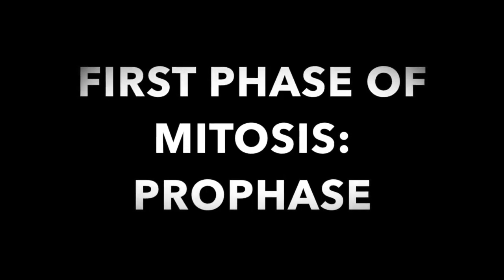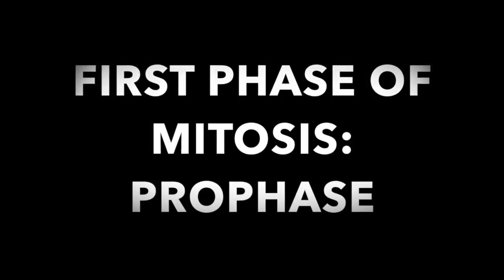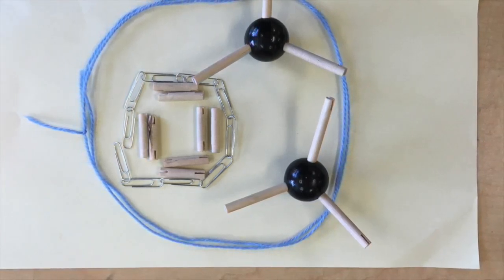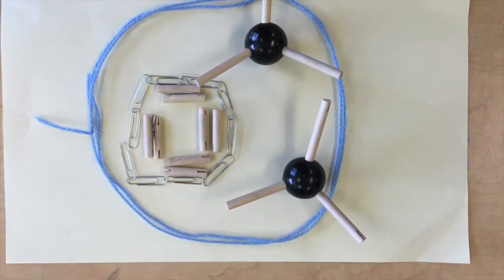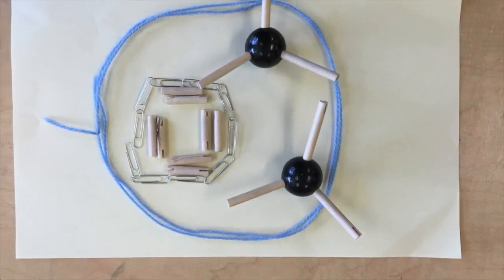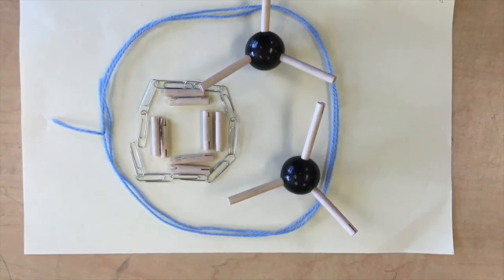The phases in mitosis are prophase, metaphase, anaphase, and telophase. The first phase is prophase. Prophase is when the chromosomes condense, the nuclear envelope dissolves, and the centrioles migrate to opposite sides of the cell and spindle fibers form.